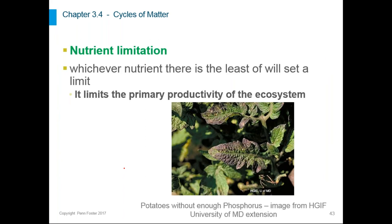This section also talks about nutrient limitation — the idea that an ecosystem needs all essential nutrients to thrive, and whichever one is least available sets a limit on the primary productivity of the ecosystem. For example, plants may get plenty of carbon dioxide and other nutrients, but if the soil only has a certain amount of phosphorus, that sets a limit for how many plants can grow. Plants will keep growing and filling spaces until all the phosphorus is used up, after which new plants may not grow at all.